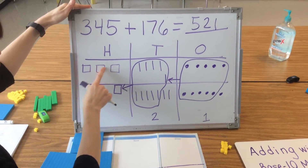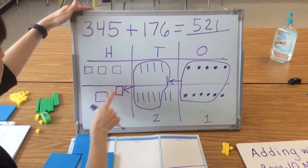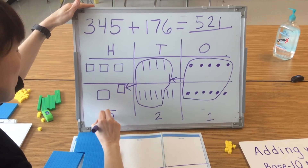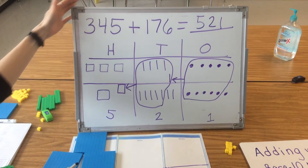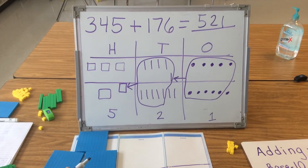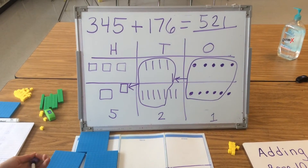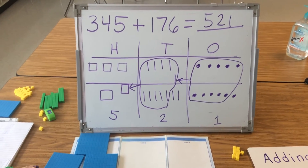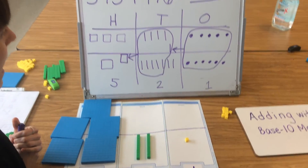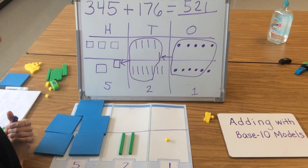And then I count my hundreds: 100, 200, 300, 400, 500. The total is 521. And that is how you use base 10 blocks and pictorial models to add within 1,000.